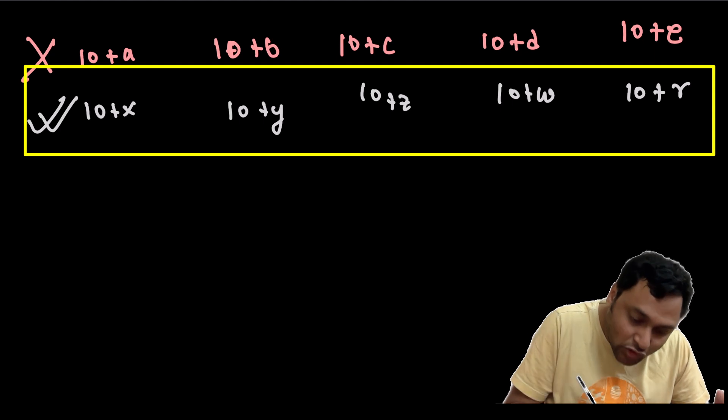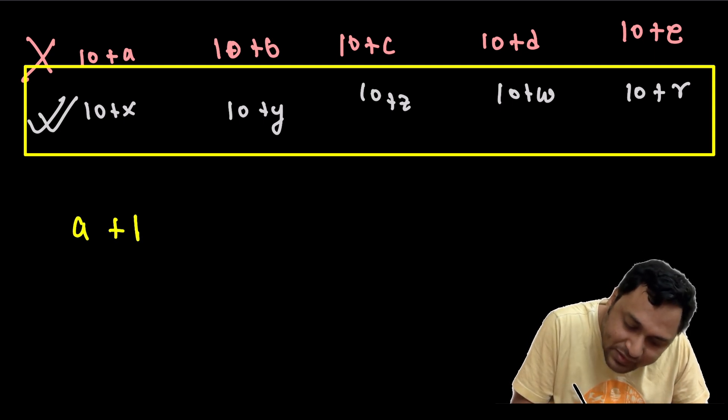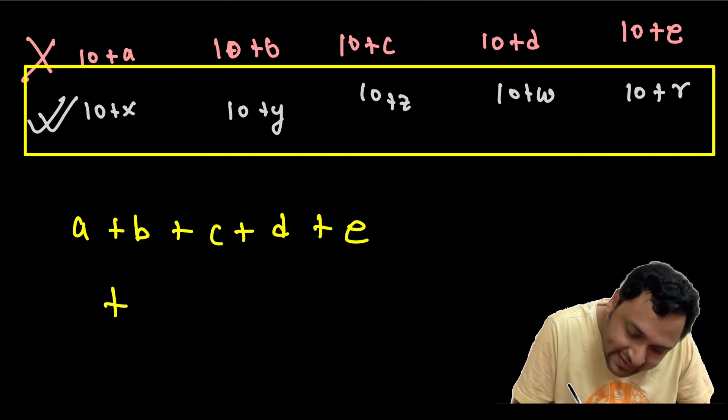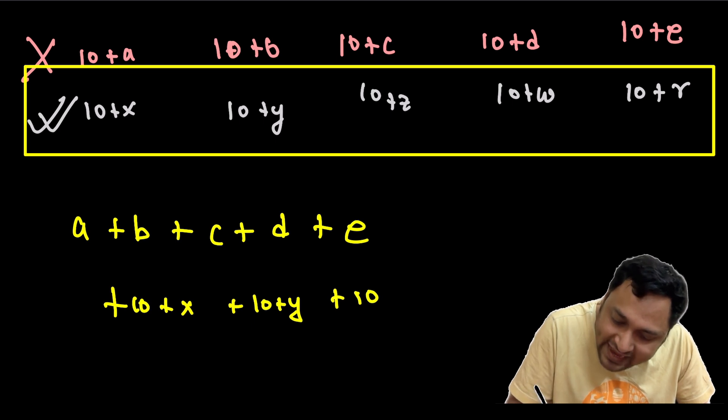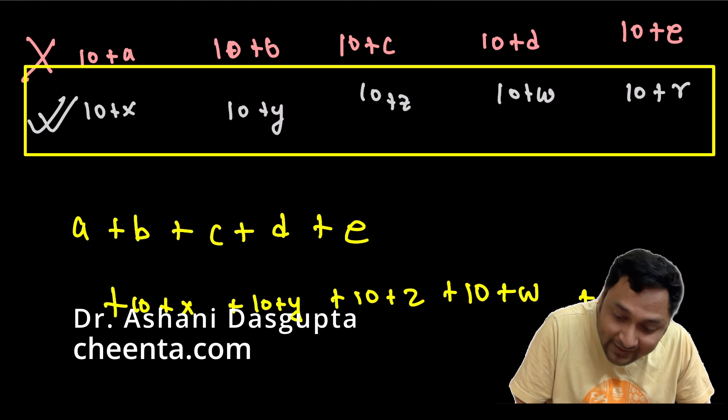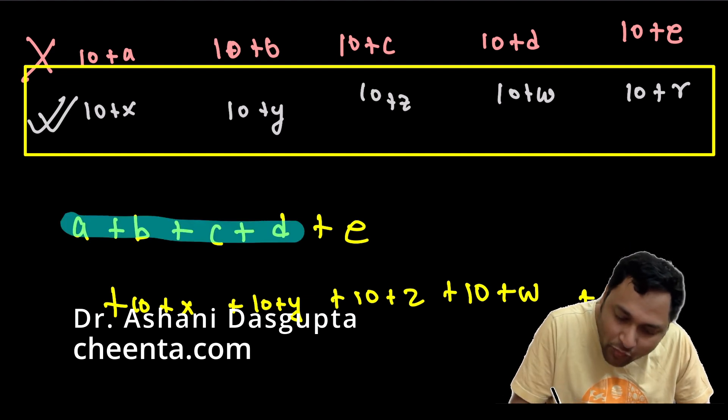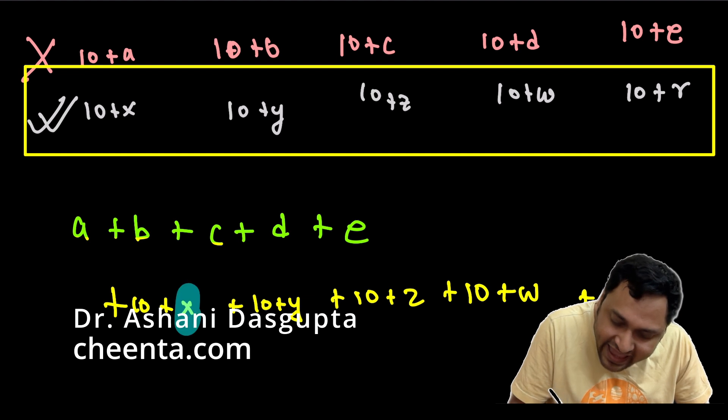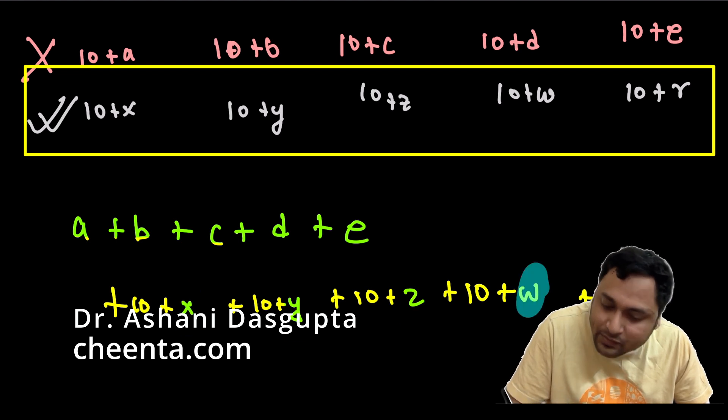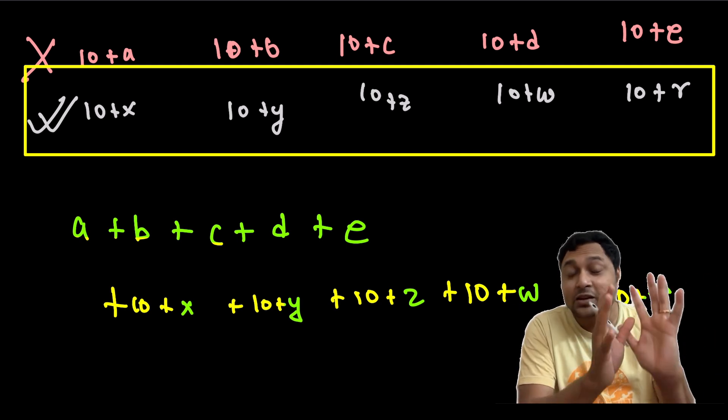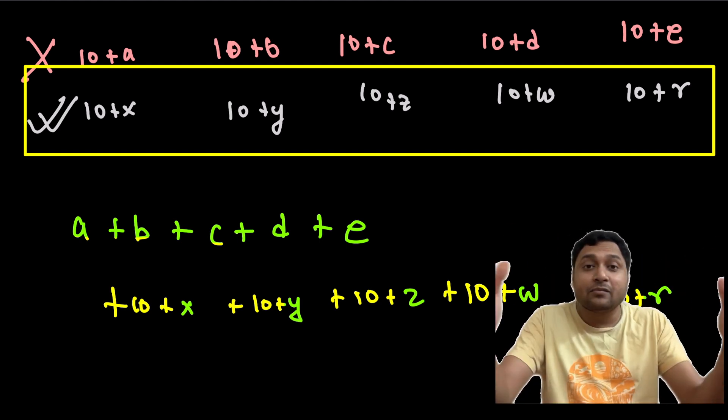So, what are the chosen numbers? A plus B plus C plus D plus E plus 10 plus X plus 10 plus Y plus 10 plus Z plus 10 plus W plus 10 plus R. Now, notice that we already know what is A, B, C, D, E, X, Y, Z, W, R. We do not know which is which, but these 10 numbers are the numbers from 1 to 10.